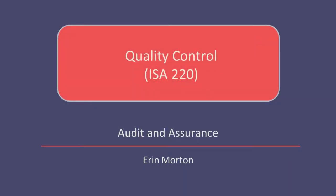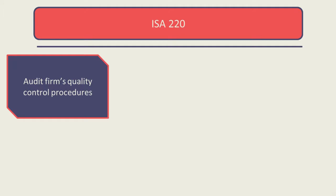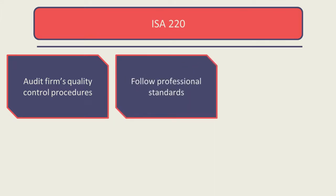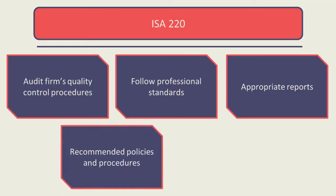This video is going to cover the topic of quality control. This relates directly to the auditing standard ISA 220, quality control for an audit of financial statements. This auditing standard focuses on the audit firm's own quality control procedures. An audit firm has an obligation to ensure they follow professional standards and that their reports are appropriate for the client's requirements. For this to happen, the standard gives a recommended set of policies and procedures that should be carried out.